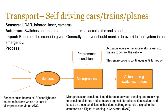Now let's look at transport. You'll get self-driving cars, trains, planes, and self-parking cars. The sensors used here are LiDAR — which stands for light detection and ranging — infrared, laser, and cameras. Actuators are switches and motors to operate brakes, accelerators, and steering wheels. Generally a driver will always be present to monitor or override the system in an emergency. Completely automated systems are more common for trains which always go on one track, so there's no chance of going on another track.